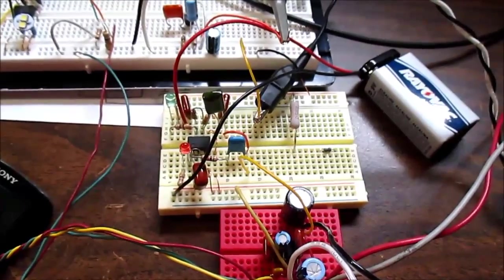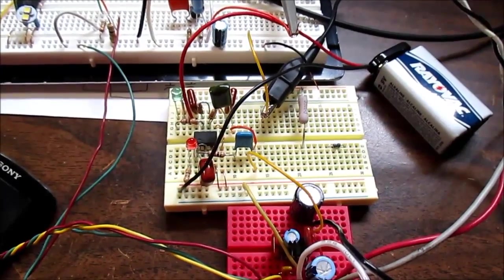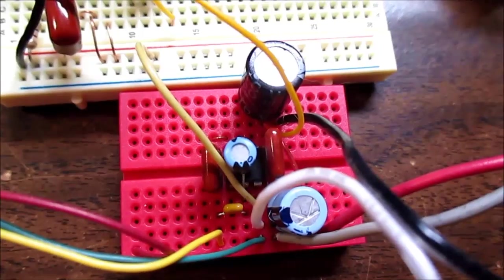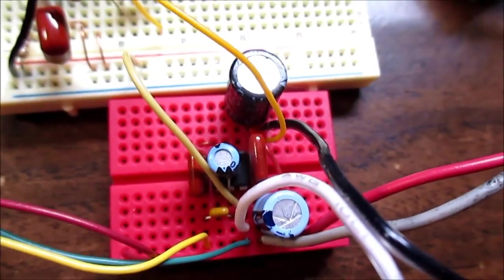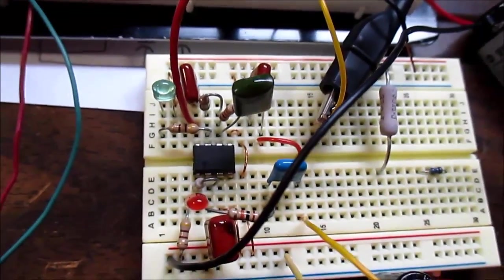One of my favorite ICs is the TDA7267 - that's the chip I'm using here that was driving the color organ circuit.